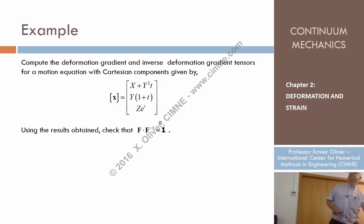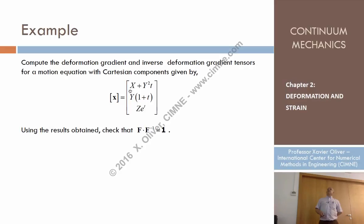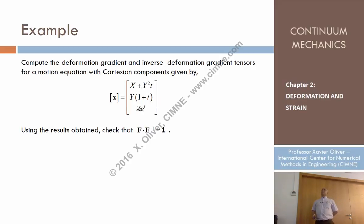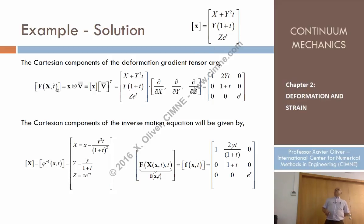Let's see this example. Imagine that we are given a motion given in terms of the three components of the spatial coordinates, expressed in terms of the material coordinates X, Y, Z and time. Let's compute the deformation gradient tensor.